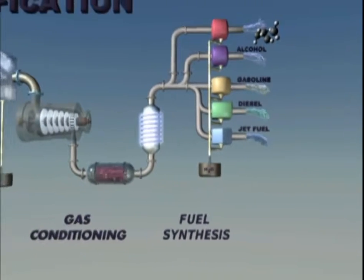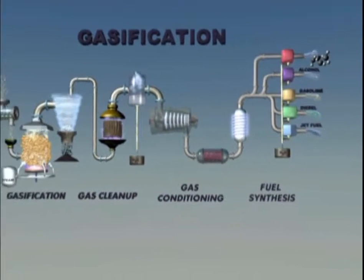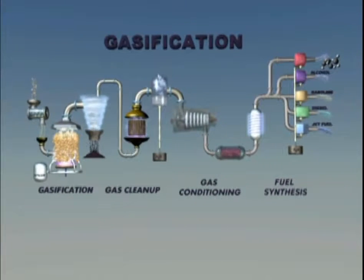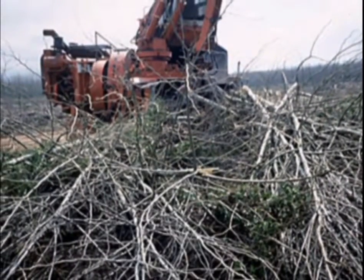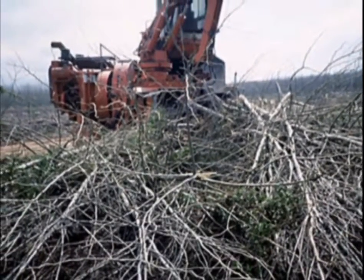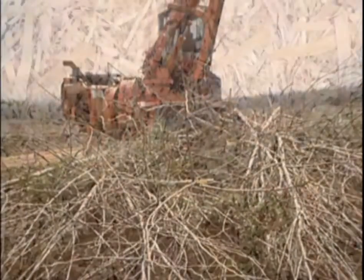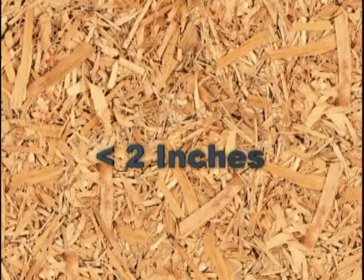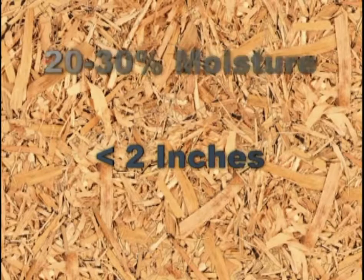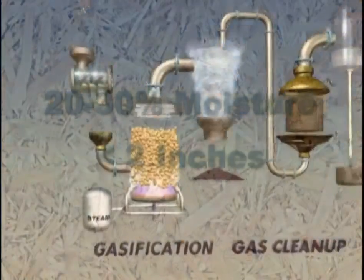Gasification occurs at relatively high temperatures. Wood material such as forest residue is a common feedstock for the gasification process. For best results, feedstock wood chips are no more than 2 inches in size and have 20% to 30% moisture content by weight, depending on the gasifier.